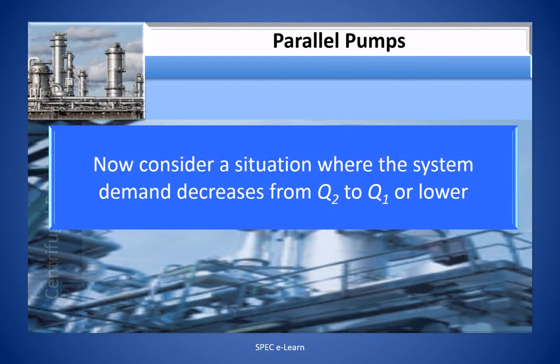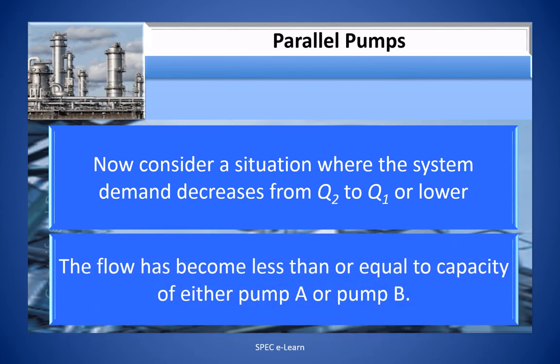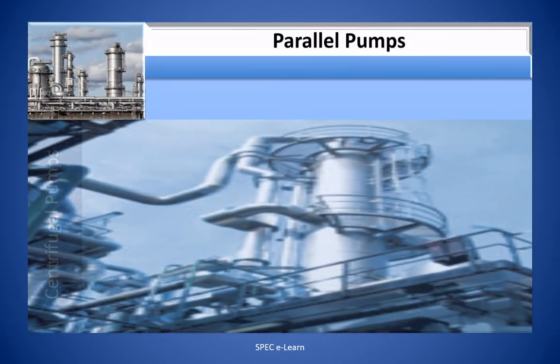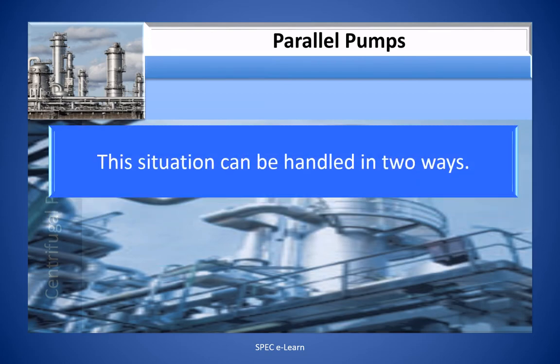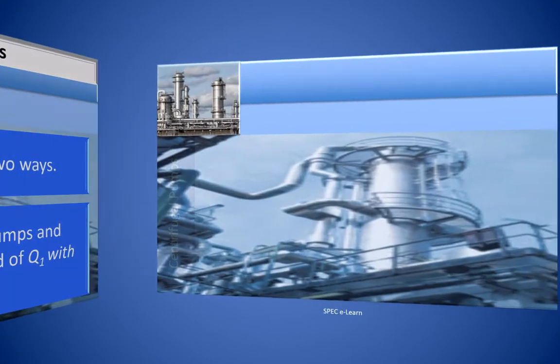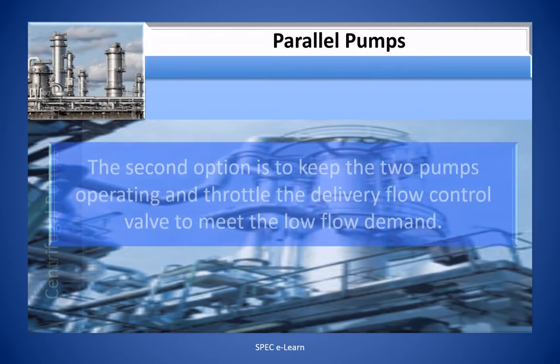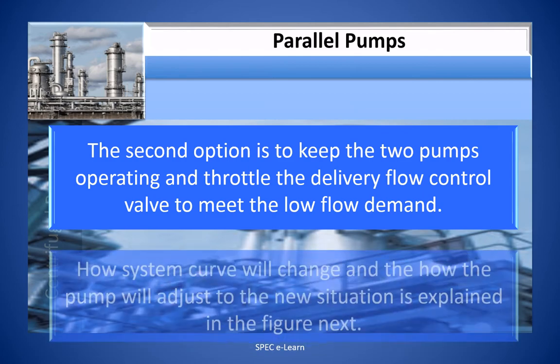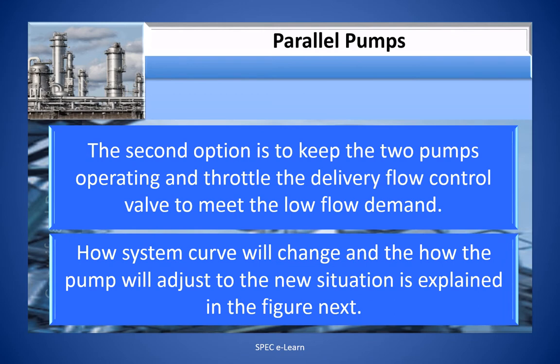Now consider a situation where the system demand decreases from Q2 to Q1 or lower. The flow has become less than or equal to the capacity of either pump A or pump B. The situation can be handled in two ways. One option is to stop one of the pumps and continue to meet the system demand of Q1 with the other pump. The second option is to keep the two pumps operating and throttle the delivery flow control valve to meet the low flow demand. How the system curve will change and how the pump will adjust to the new situation is explained in the figure next.